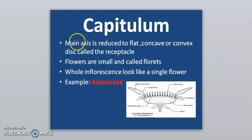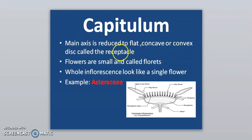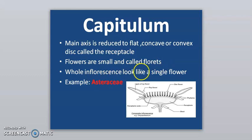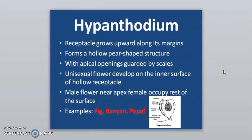In capitulum, the main axis is reduced to a flat, concave, or convex disc called the receptacle. Flowers are small and called florets. The whole inflorescence looks like a single flower — example is Asteraceae, including sunflowers.